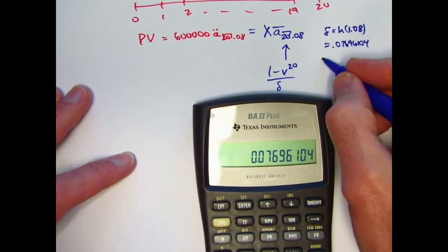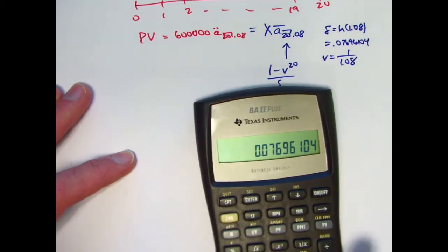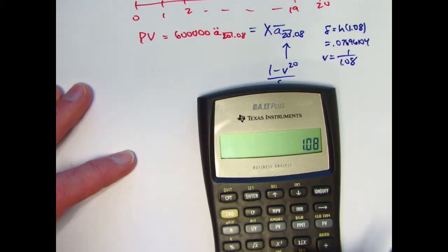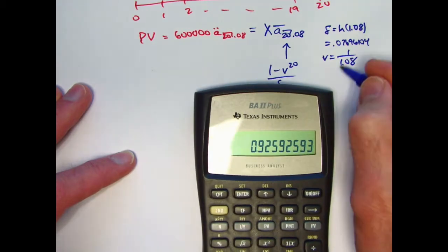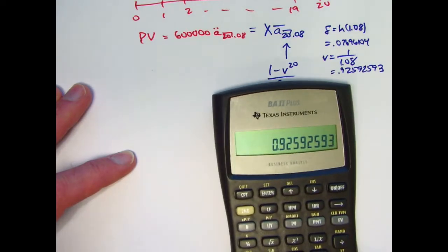How about the value of v? v is going to be 1 over 1.08. 1.08 take 1 over that. You get 0.92592593. I'll store that in register 1.